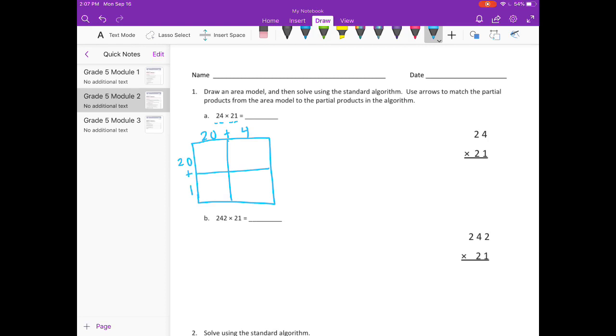And now I'm going to multiply. So in this square we'll have 20 times 20. 20 times 20 is 400. Over here we'll have 20 times 4 which is 80. Here we'll have 20 times 1 which is 20. And then here we'll have 1 times 4 which is 4.